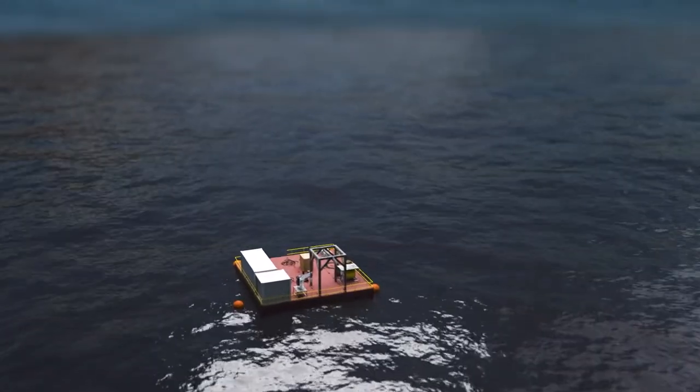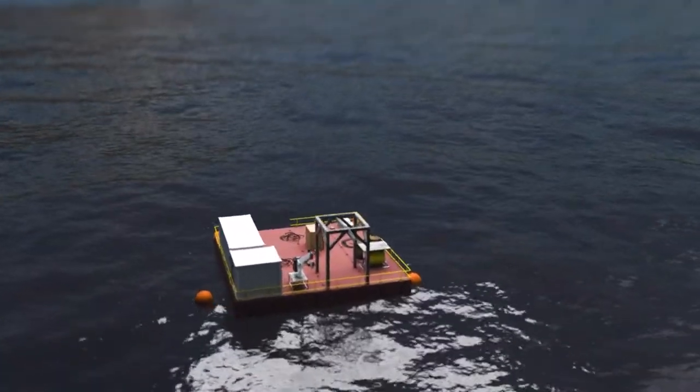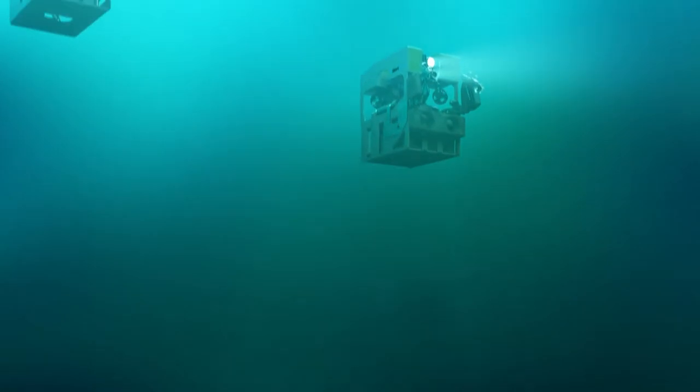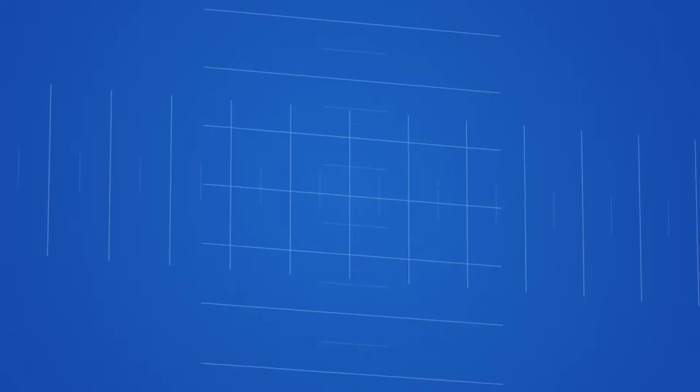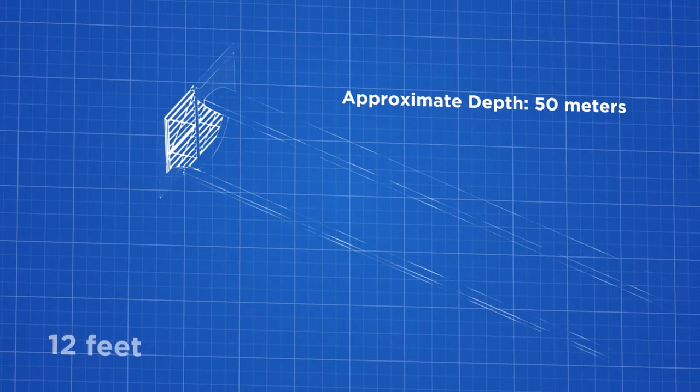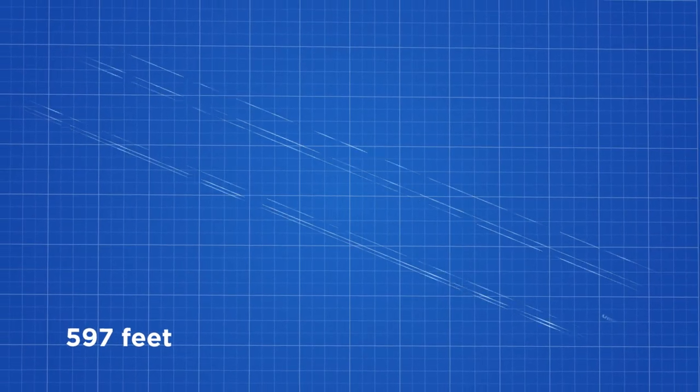Deployed from a barge on the reservoir, Hibbert Insure used two customized ROVs. ROVs were used instead of divers for safety reasons because of the depth and travel distance inside the tunnel to where the isolation barriers need to be installed.